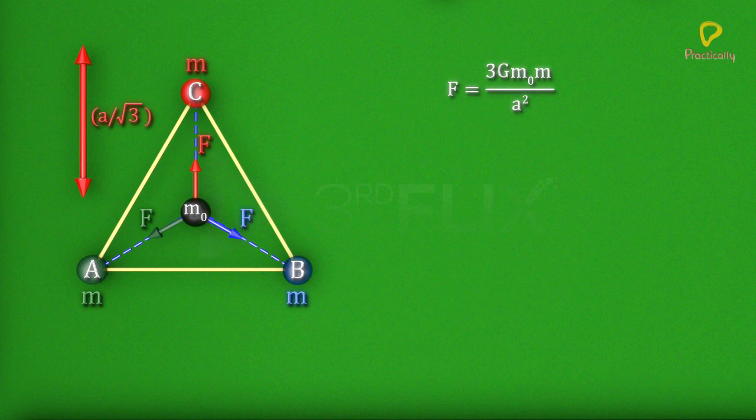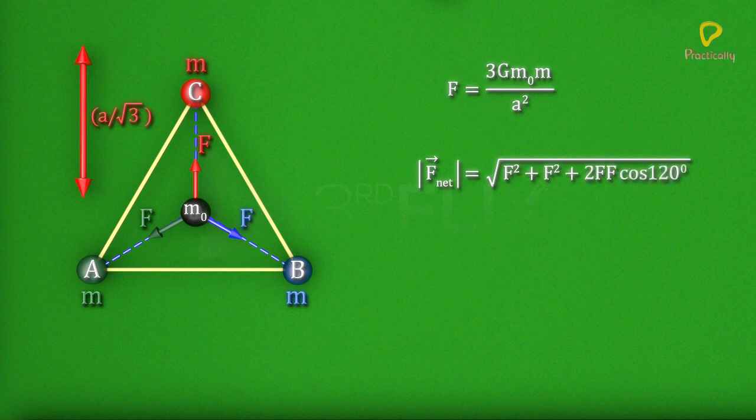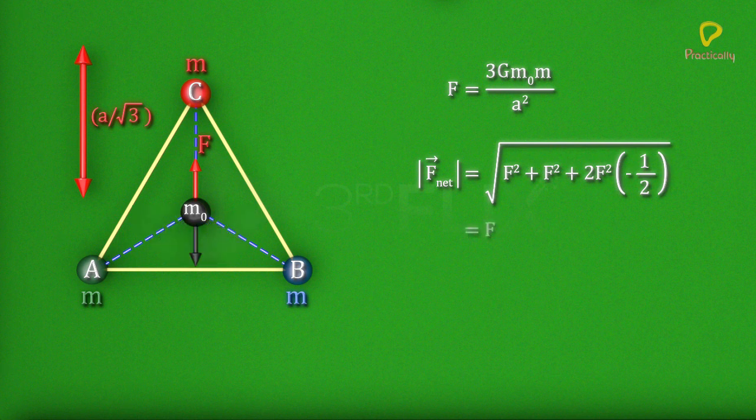Resultant force due to A and B is equal to the square root of f square plus f square plus 2 f f cos 120 degrees, which equals to f.